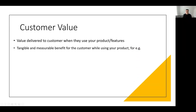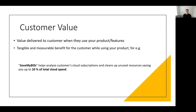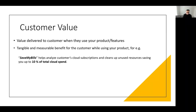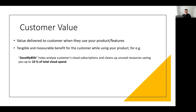One measurable and tangible example is spend reduction. Say I have a product called Save My Bills that helps analyze customers' cloud subscriptions, cleans up unused resources, and saves 10% of total cloud spend. A customer can say: I'll spend 1% of my money on this product and save 10% on cloud spend — that's still worth it. If you articulate customer value in clear terms like dollar value or percentage of spend, that's a very compelling story.